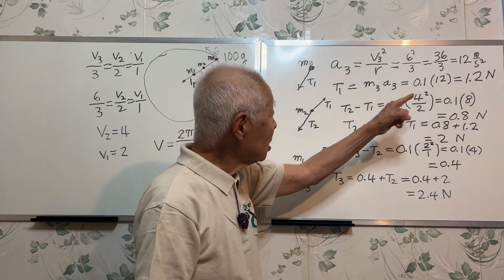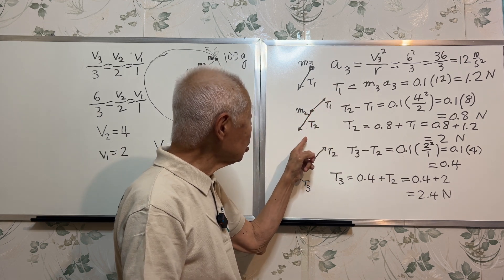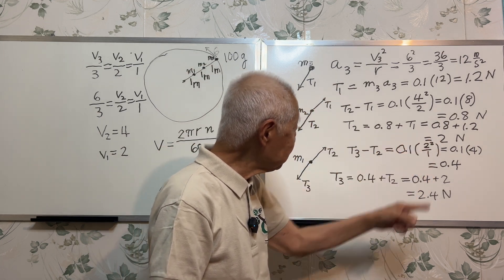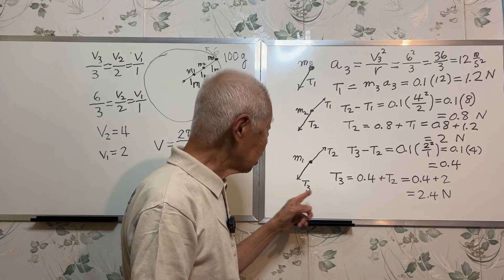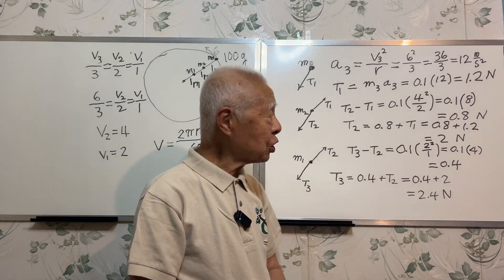Therefore the sum of T2 and 0.4 is 2.4 newtons. So we have found all three tensions. T1 is 1.2 newtons, T2 is 2 newtons, and T3 is 2.4 newtons. So this is the answer.